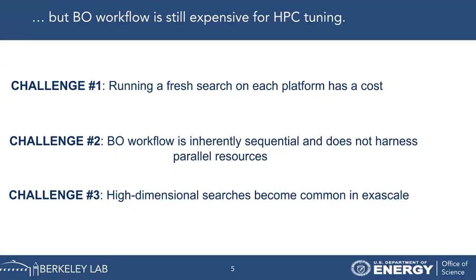Bayesian optimization is not something new — people have been working on this for many years. But when we apply it for performance portability, some challenges show up. The first challenge: should I run a fresh search on every new supercomputer? The second challenge: Bayesian optimization is inherently sequential and doesn't harness the parallel resources available in current supercomputers. The third challenge: Bayesian optimization may not be well suited for more than 20 parameters, which is very common in exascale applications.